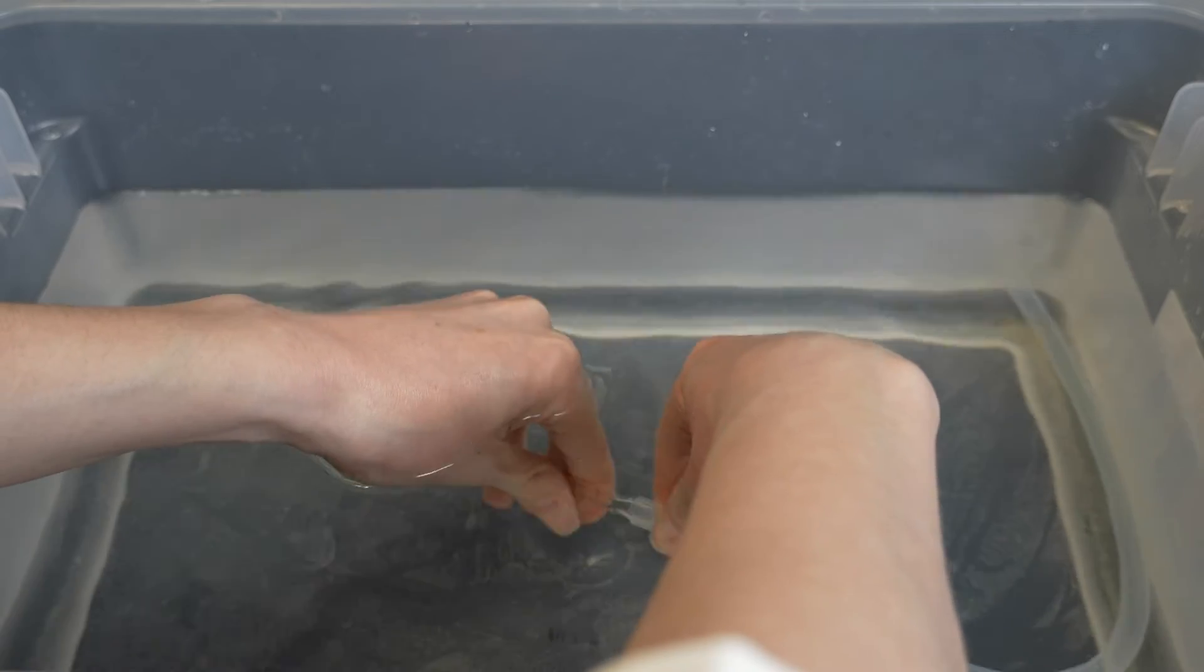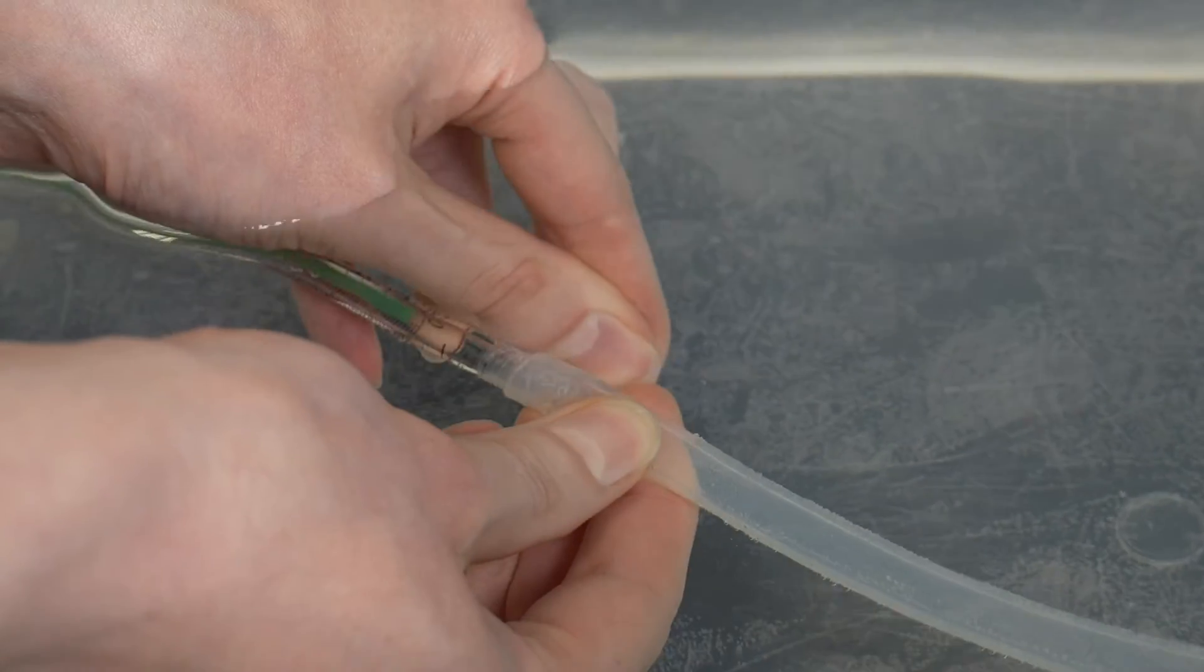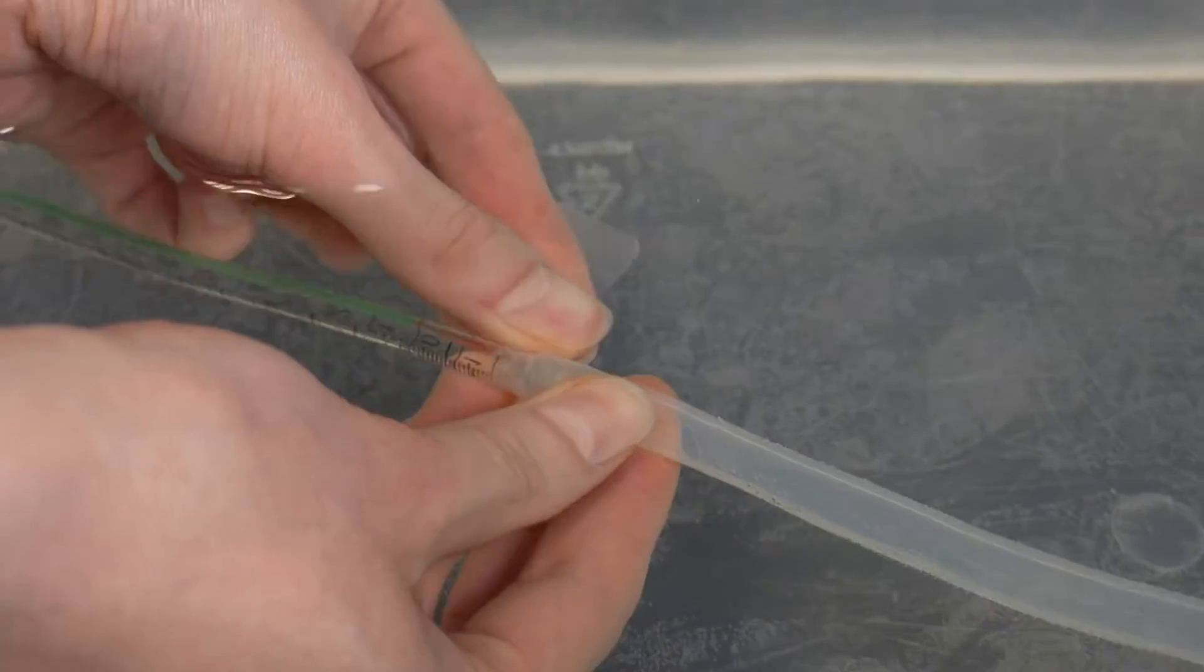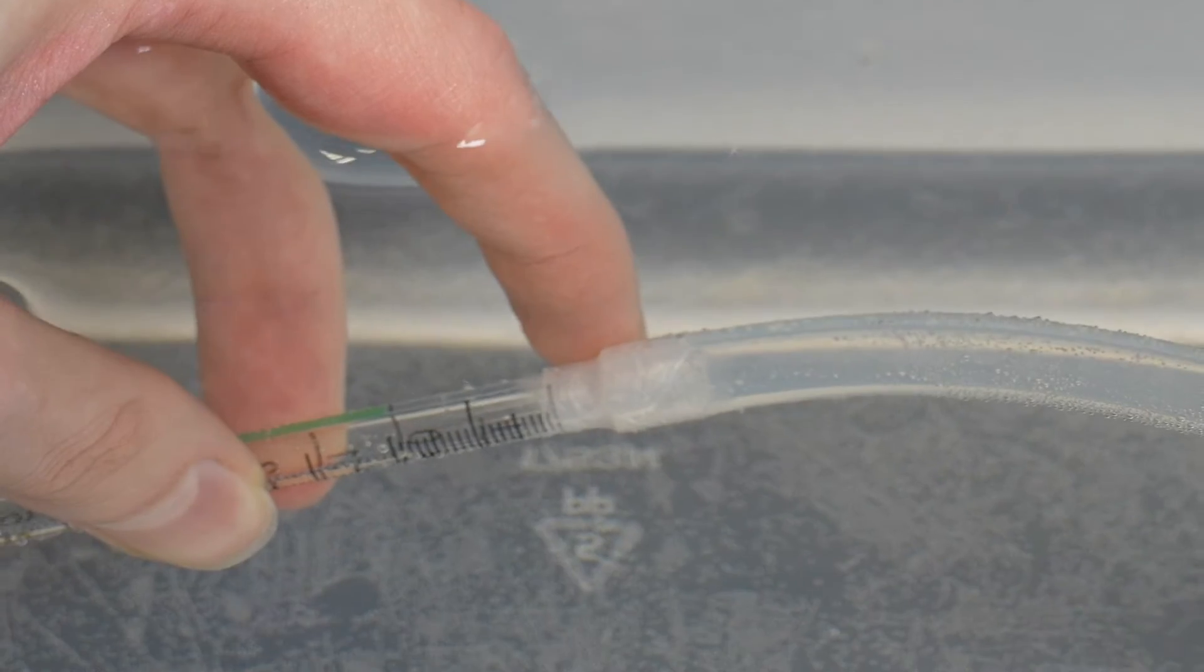Next I'll insert the blunt end of the pipette into the plastic tubing, keeping them underwater as I do, and wrap the point at which they connect with parafilm to create a tight seal. Petroleum jelly makes a good seal too if you don't have parafilm.